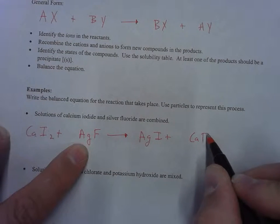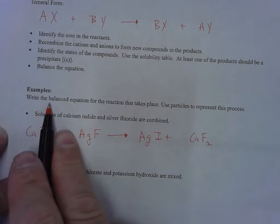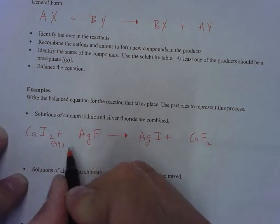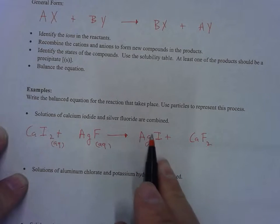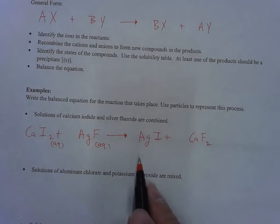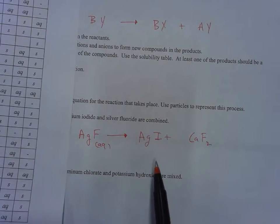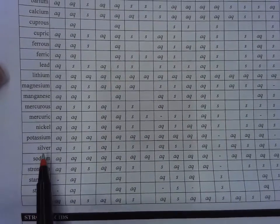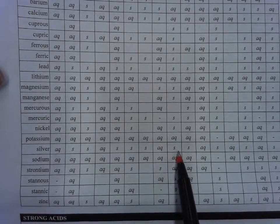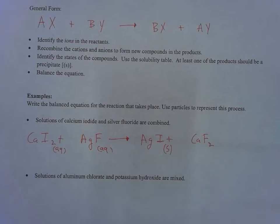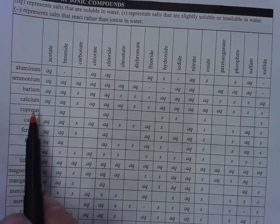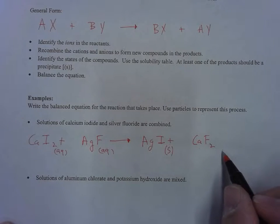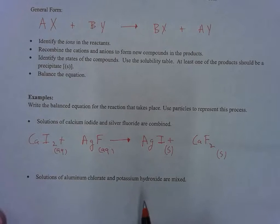When these combine, calcium switches with silver. So silver with plus one combines with iodide minus one, plus calcium and fluoride, CaF2. It says solutions of calcium iodide, that's aqueous—whenever you see 'solutions of' you know it's dissolved. Now we look at our solubility table to figure out which one forms a precipitate. Silver iodide did in fact form a precipitate, and calcium fluoride also did. So you've got two precipitates.